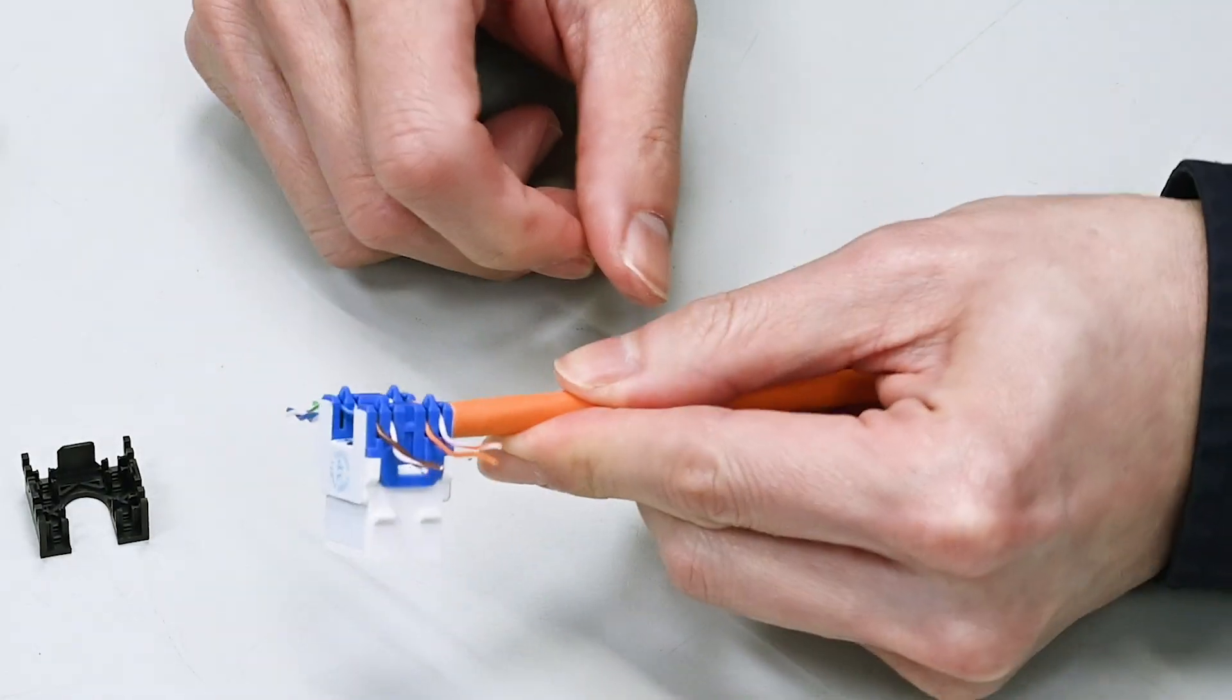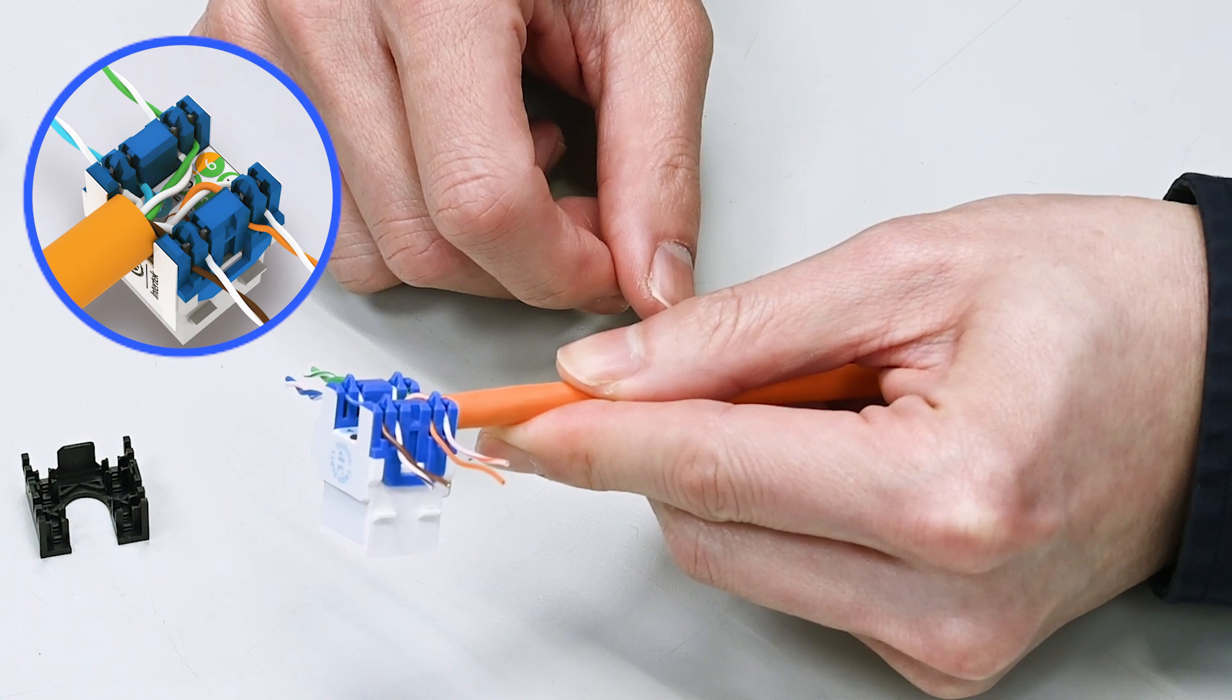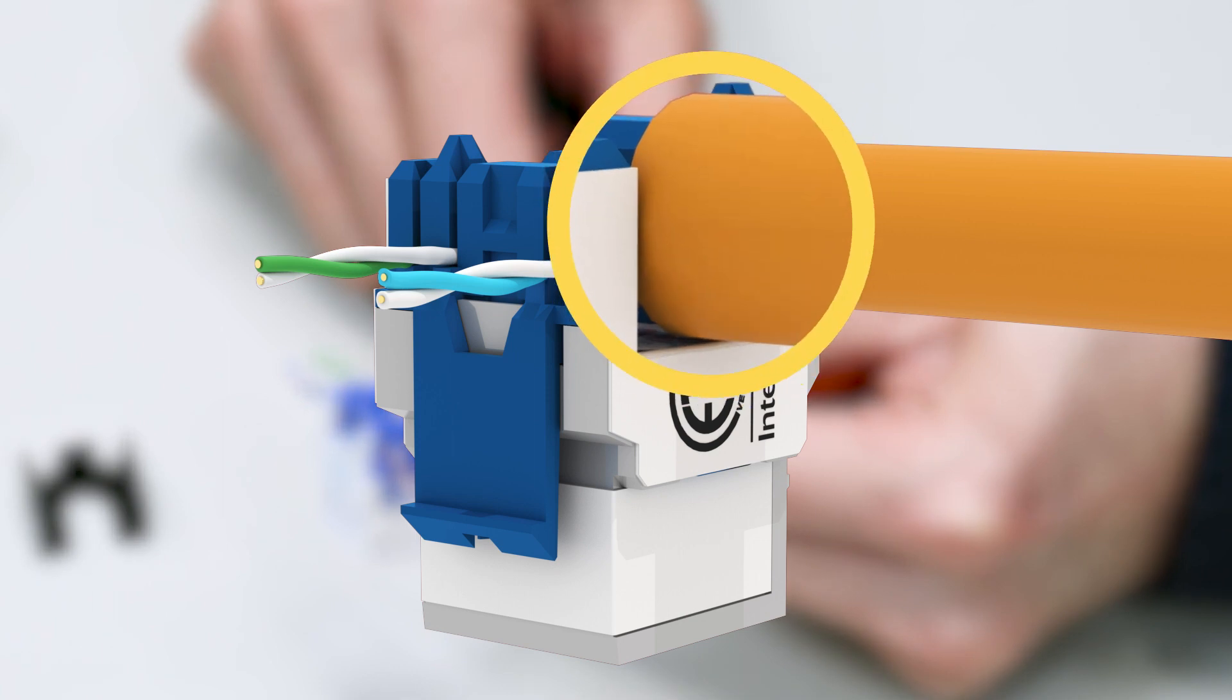As previously mentioned, the spacing between two IDC rows is large enough. That gives you the convenience to place the cable completely in between the IDC rows with no gap.